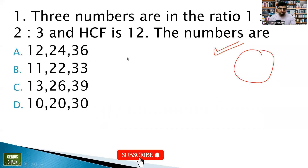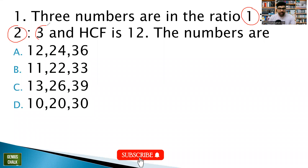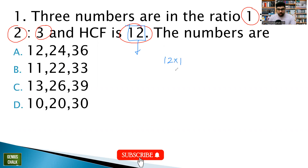Let's start with the first question. The first question says: there are three numbers which are in the ratio 1:2:3 and their HCF is 12. What are those numbers? The concept is — HCF, that is Highest Common Factor, is always present in all the numbers. So if HCF is 12, the numbers are of the form 12×1, 12×2, and 12×3, giving us 12, 24, 36, which is the first option.